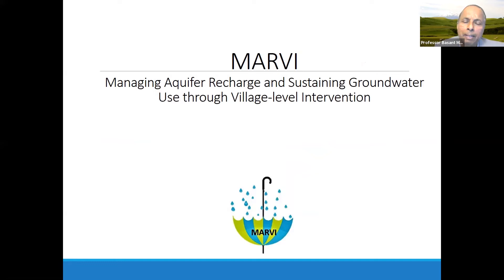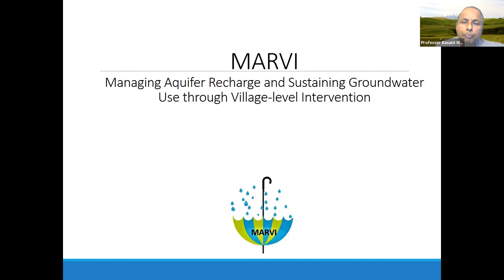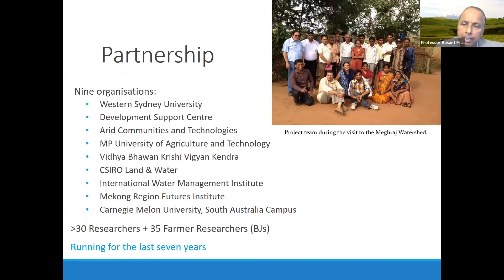I'd like to share some things we have done in the last nine years in Rajasthan and Gujarat. It's a project called MARVI — Managing Aquifer Recharge and Sustaining Groundwater Use through Village Level Intervention. The project was funded by ACIAR, the Australian Centre for International Agricultural Research, and the Coastal and Water Partnership. It has been running since 2012 and is still continuing. It has nine partners — Western Sydney University is the lead partner, with the Development Support Centre and Communities in Technology in Gujarat, MPUH in Rajasthan, and in Australia: CSIRO, International Water Management Institute, Mekong Region Futures Research, and Carnegie Mellon University.